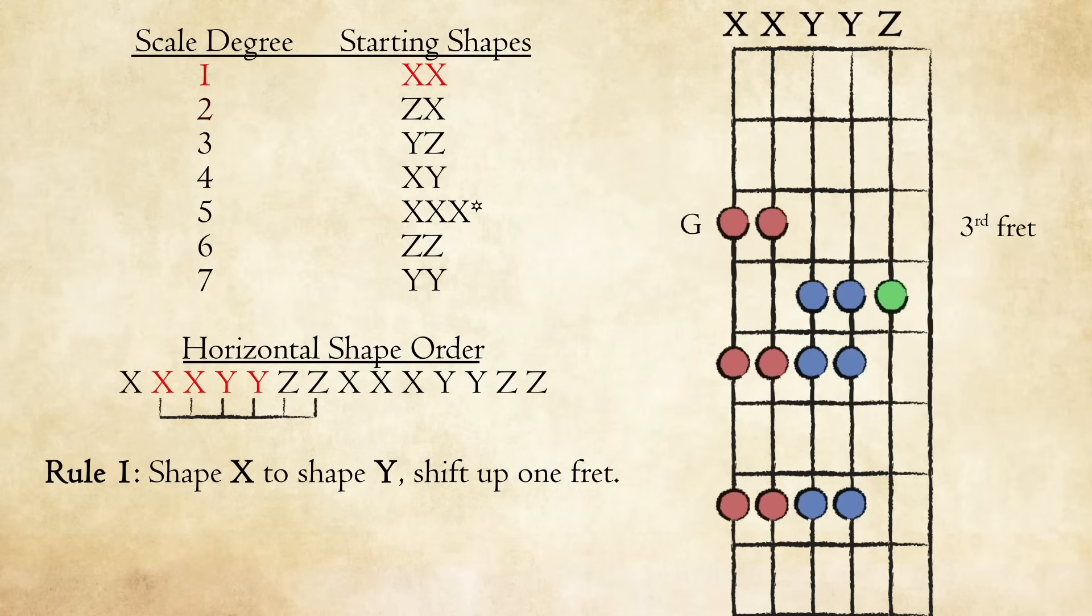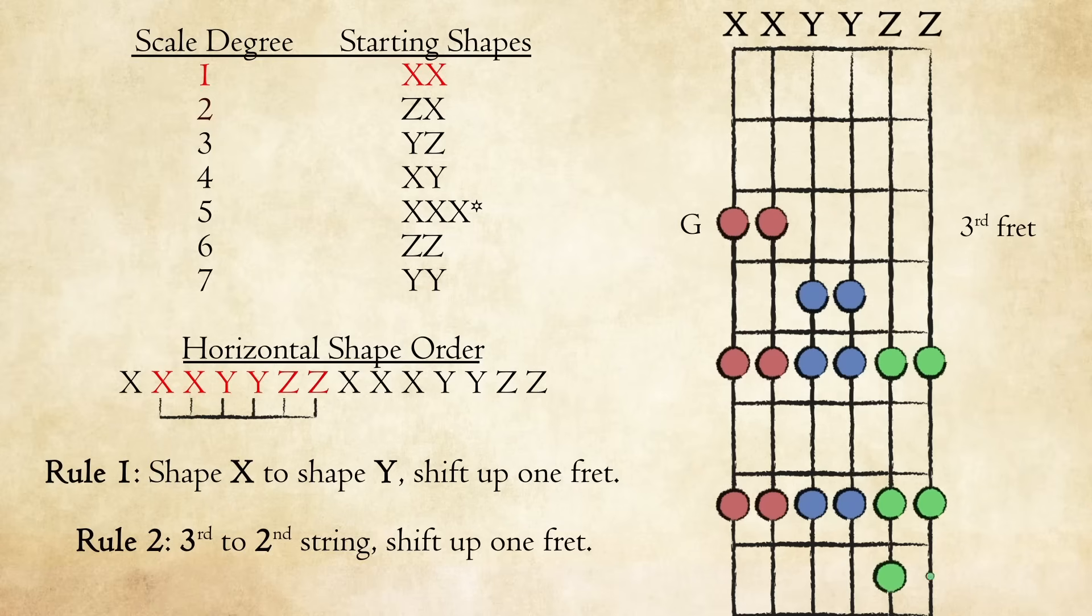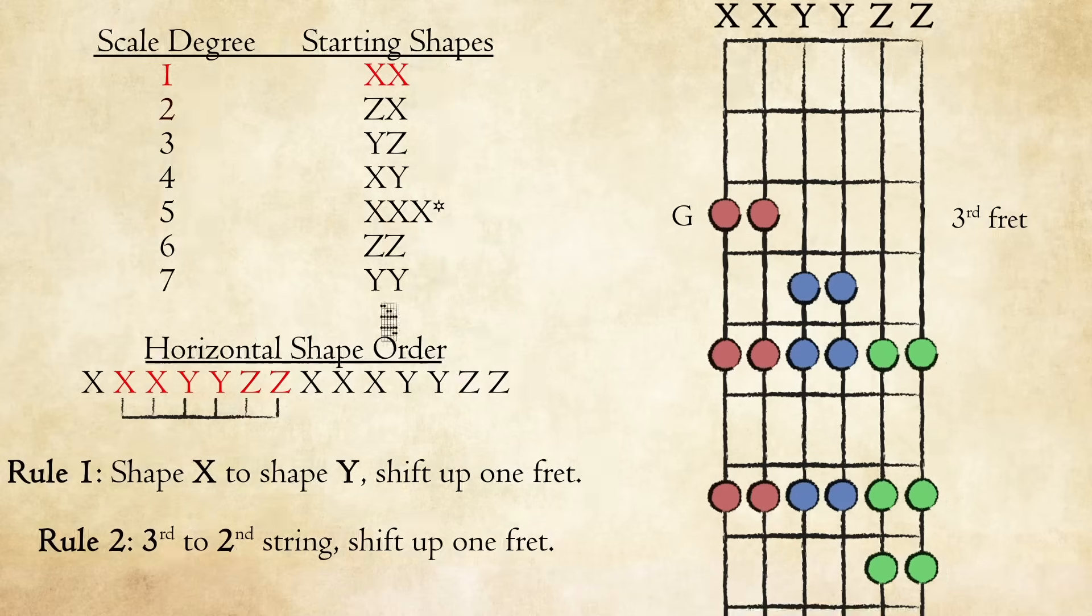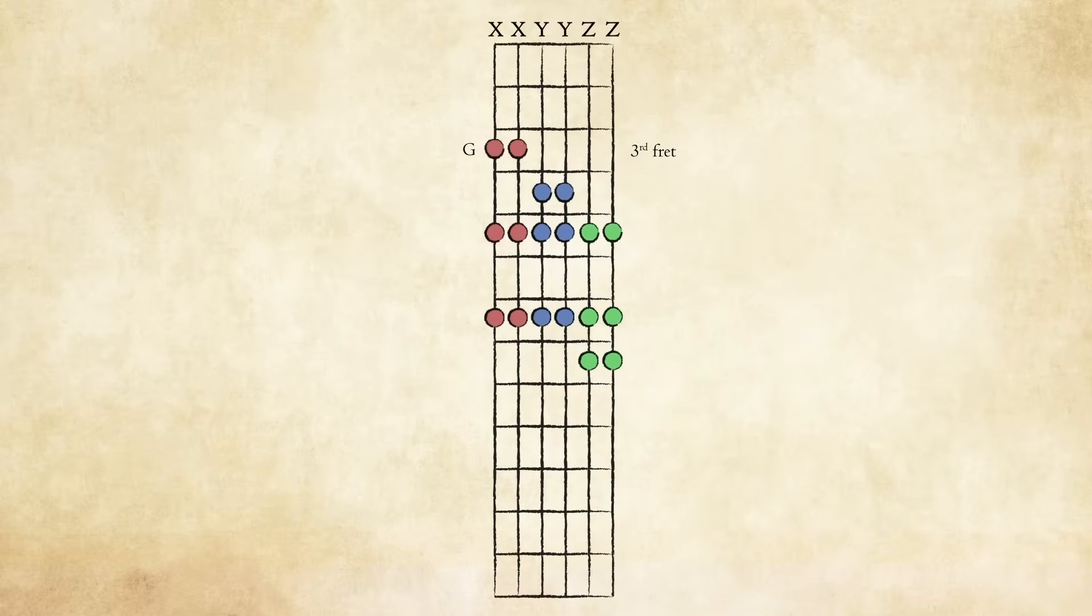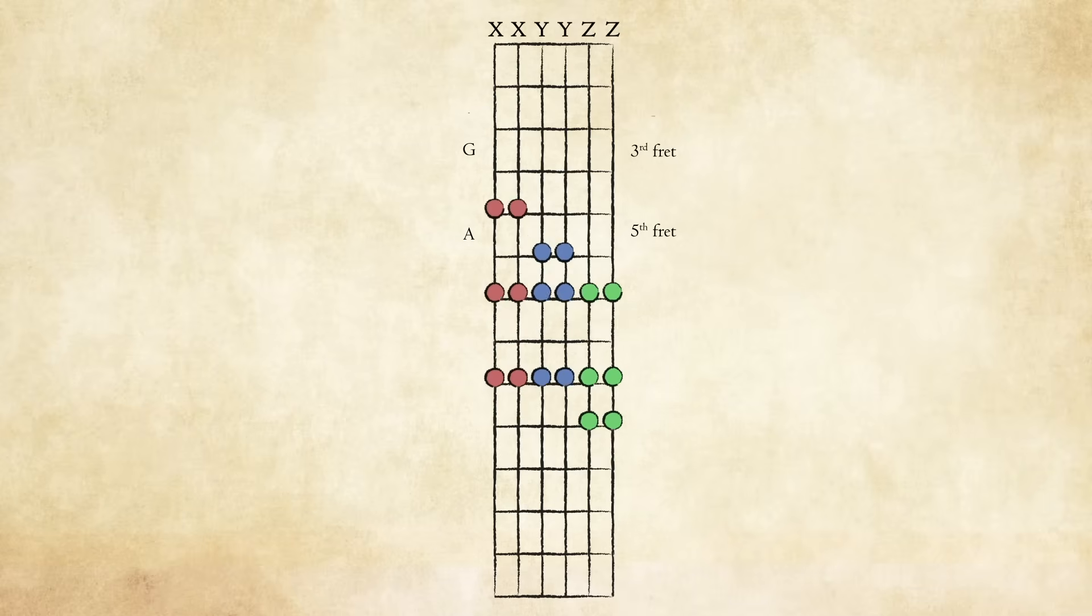Now play the second shape Y. After that, we move to shape Z, but shifting up a fret because we're moving from the third string to the second string, and then end the pattern with your second Z shape. As you can see, the pattern we just built is identical to the original pattern one. This works anywhere up and down the fretboard. If you wanted to play this pattern in the key of A rather than G, just slide the whole thing up to the fifth fret. If you wanted to play in F sharp, slide it down to the second fret. This is completely movable.